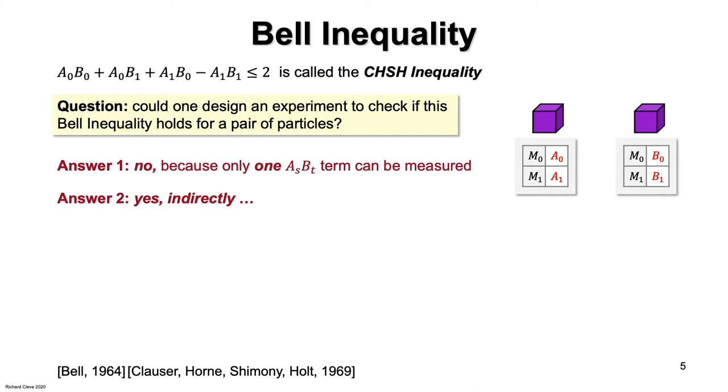To understand how, consider what happens if you choose bits S and T randomly and generate the quantity minus one to the ST ASBT. You can acquire AS and BT by performing measurements.